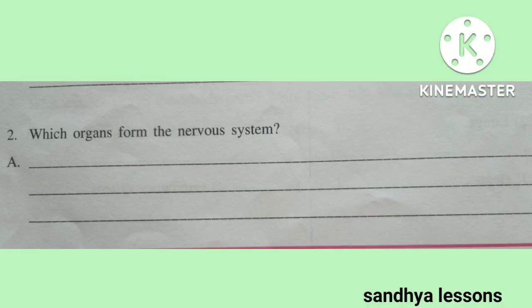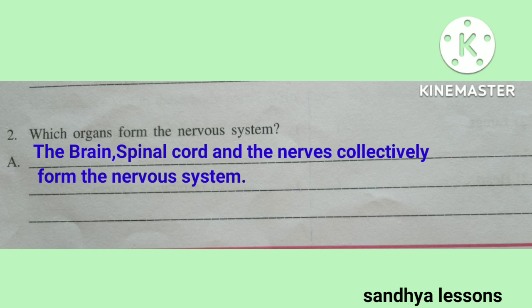Second question: Which organs form the nervous system? The brain, spinal cord, and the nerves collectively form the nervous system.